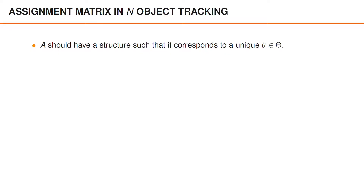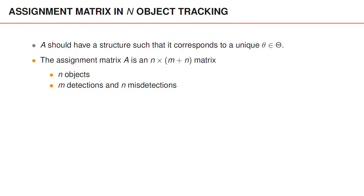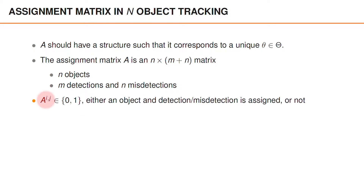For the assignment matrix in n-object tracking, it is important that it has a structure such that it corresponds to a unique, valid association. We define the assignment matrix as a matrix of size n by m plus n, and this encodes the n objects, the m detections, and n misdetections. The elements in the assignment matrix are either 0 or 1, and they encode if an object and a detection or misdetection are assigned or not.